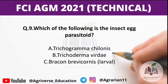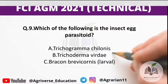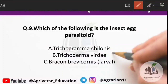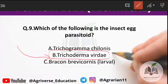Ninth question: which of the following is an insect egg parasitoid? The right answer is Trichogramma chilonis. Option C is a larval parasitoid. Note: Trichoderma is a fungus used as a biofungicide — do not confuse Trichogramma (an insect) with Trichoderma (a fungus).